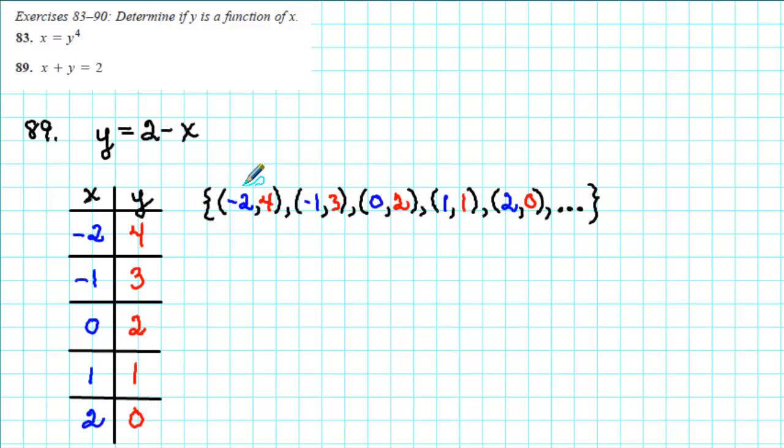This time notice that each of our ordered pairs has a different x value. This means that each x value determines exactly one corresponding y value. Y equals 2 minus x does represent y as a function of x.